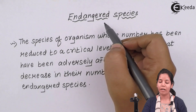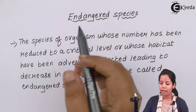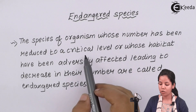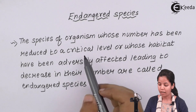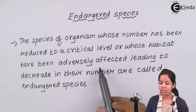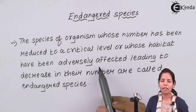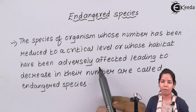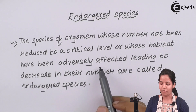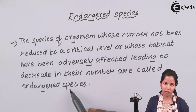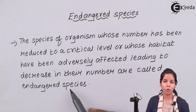Endangered species are the species of organisms whose number has been reduced to a critically low level and whose habitat has been adversely affected. Especially the polar bears living in the Arctic region — due to global warming, the Arctic region is melting down and the population of all polar animals living on that snow has greatly reduced. These organisms are nothing but endangered species, or species which are in thorough danger.